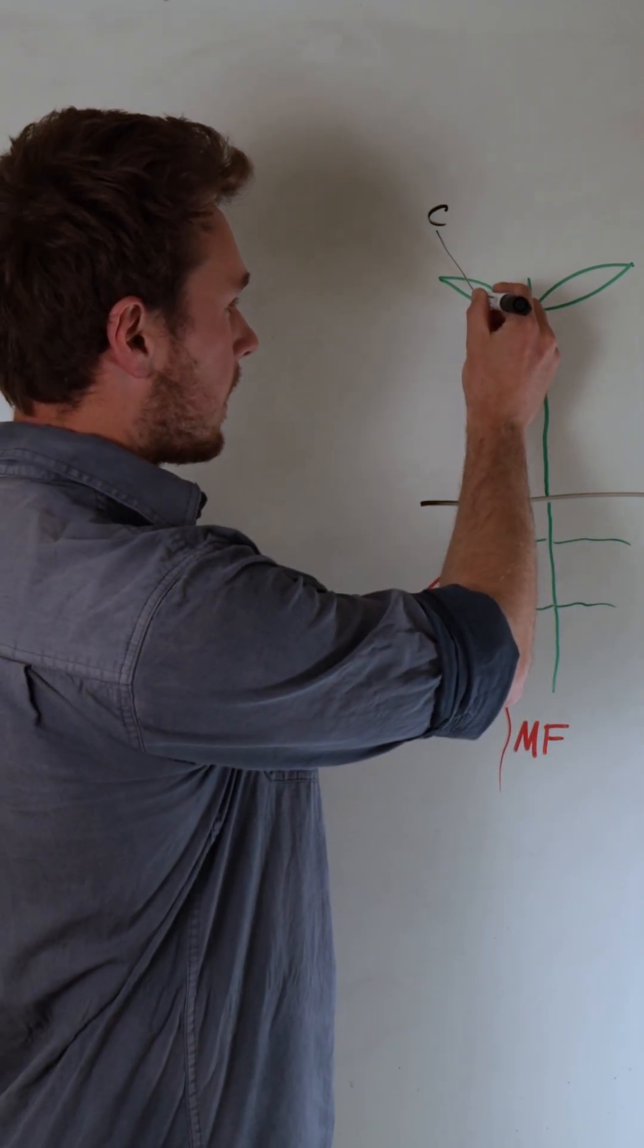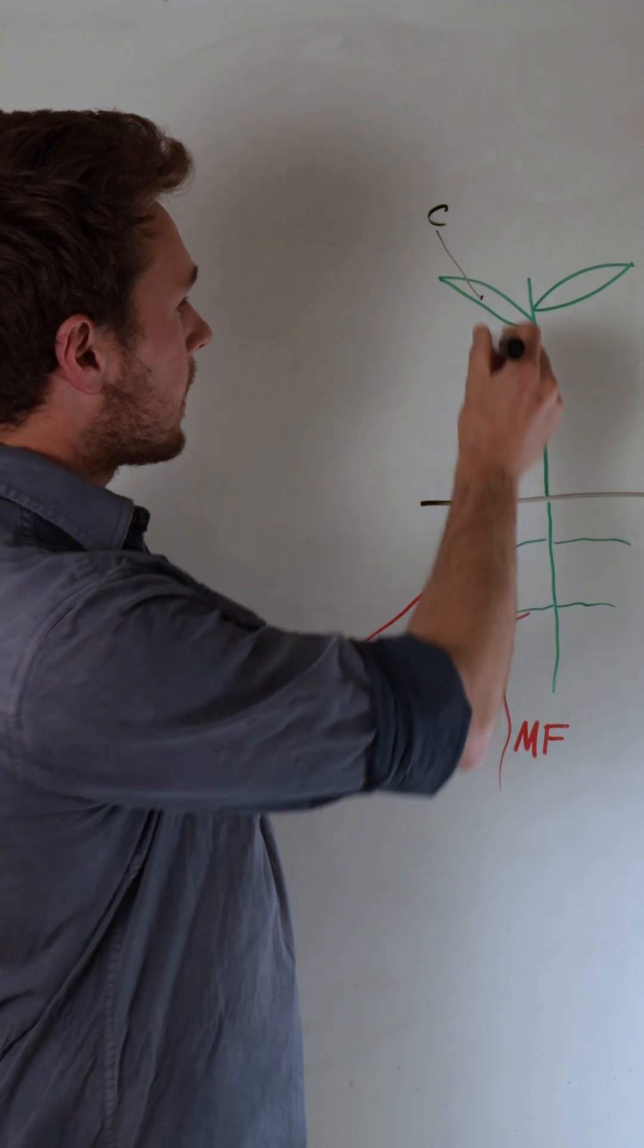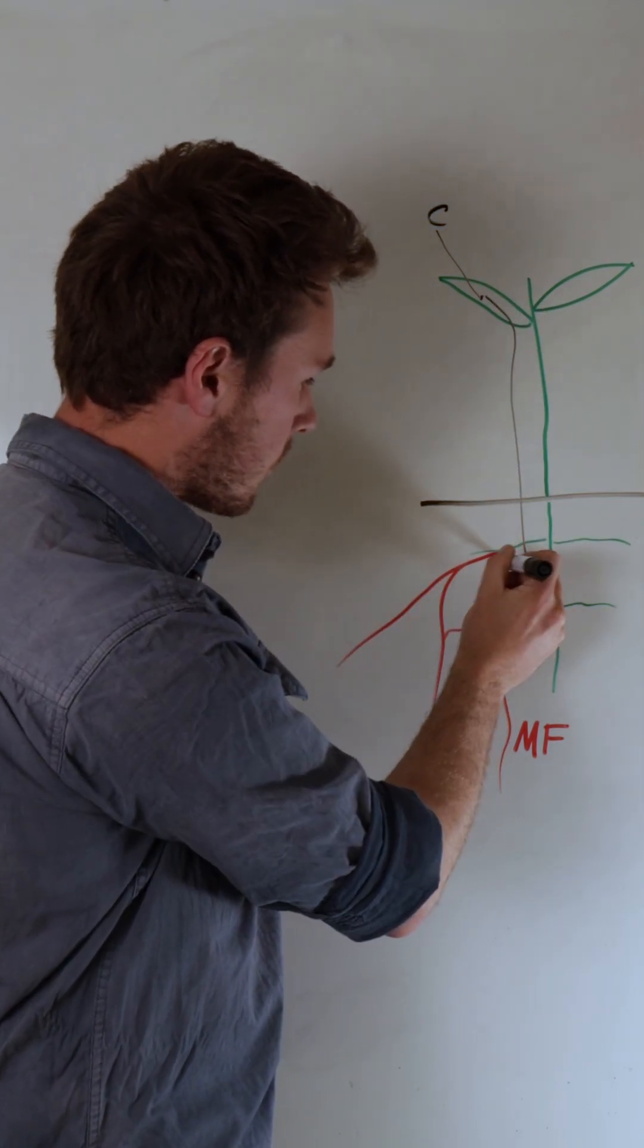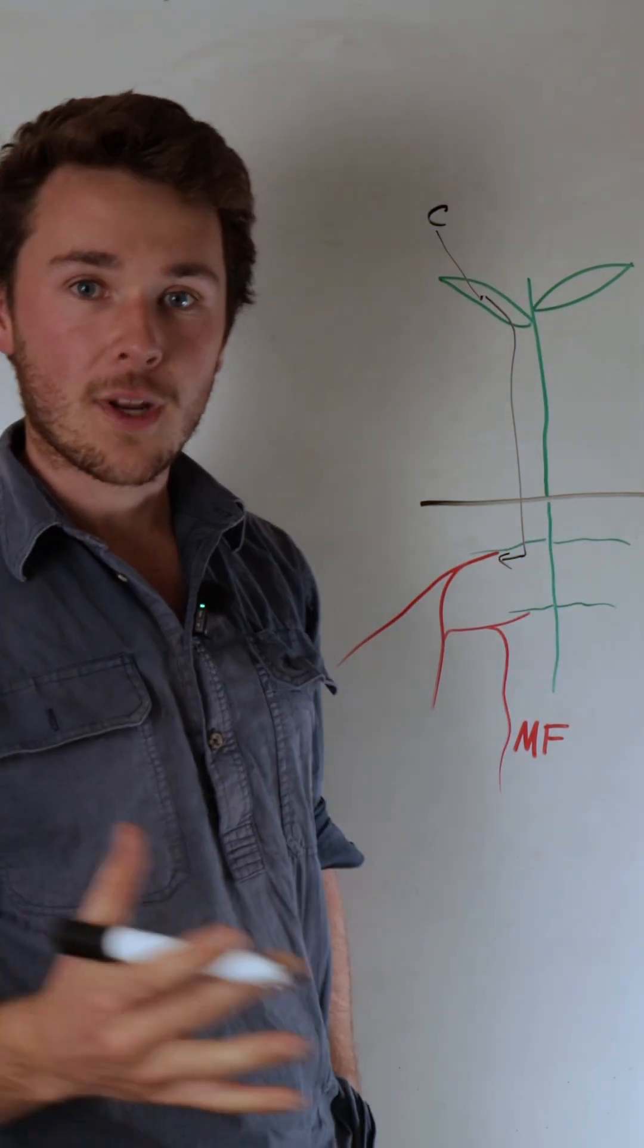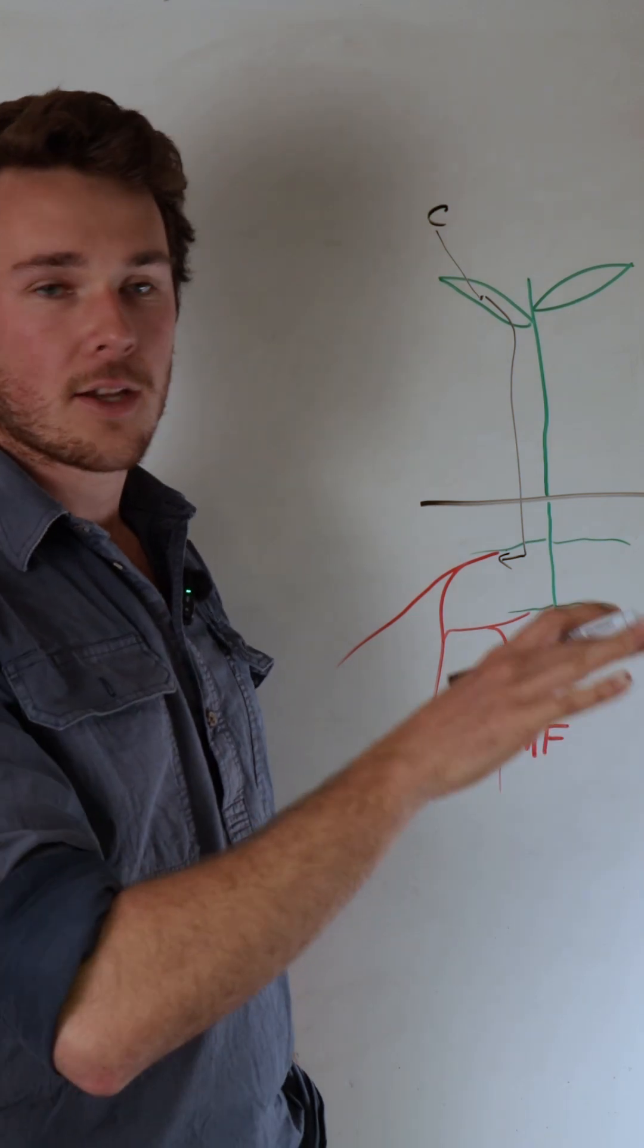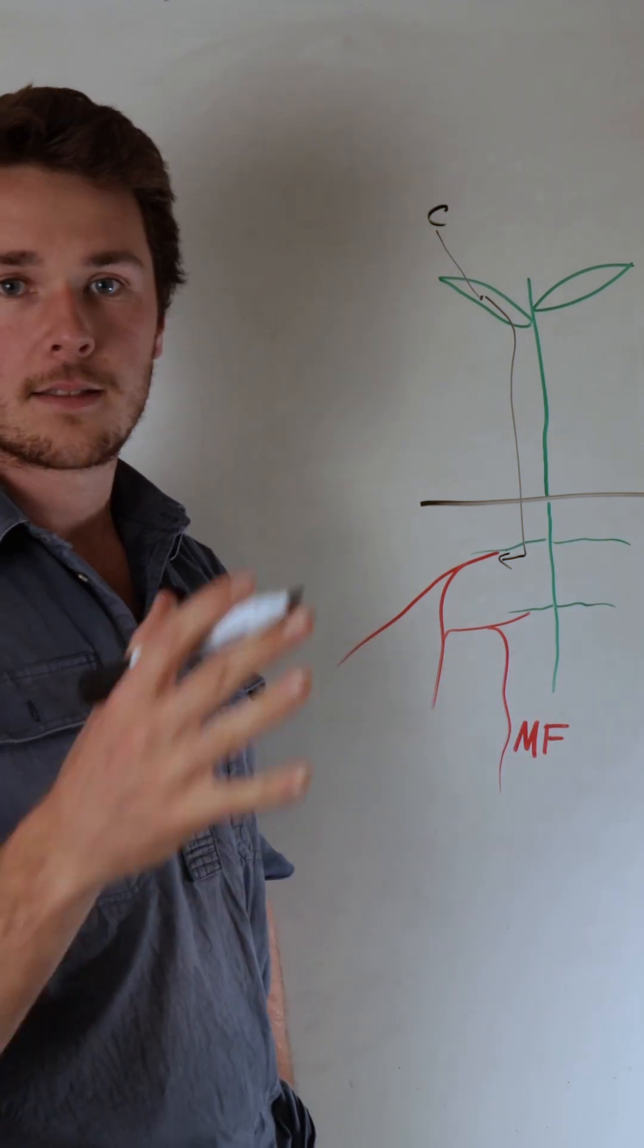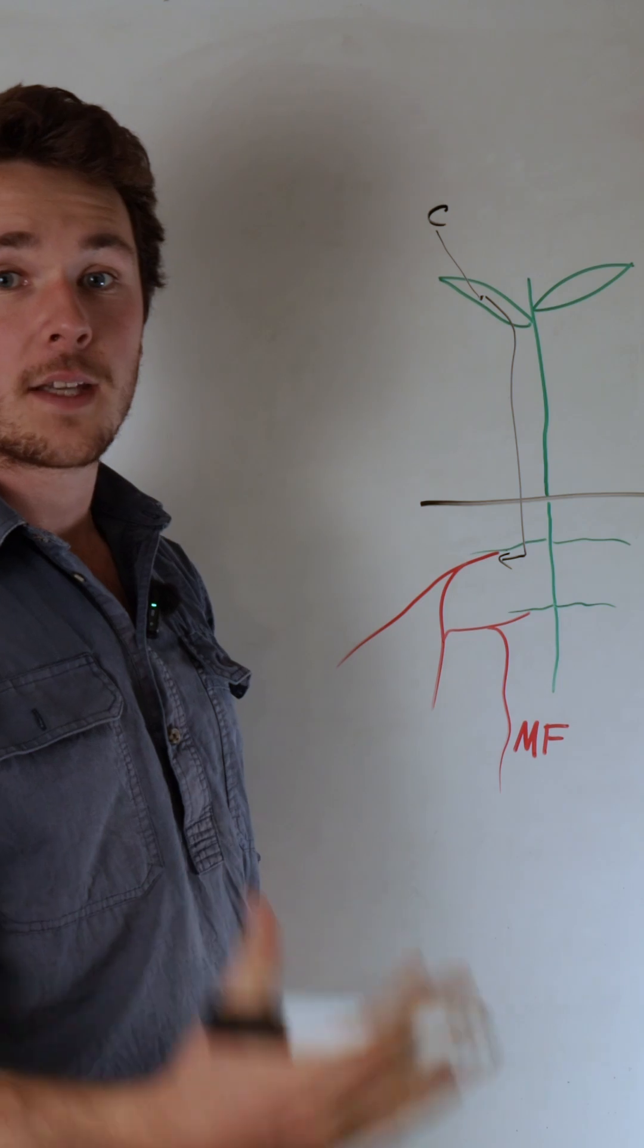That happens in the leaf, and then it is pumped down into the roots and released as root exudates. This is not just sugar but also fatty acids, lipids, and amino acids to feed the soil biology.